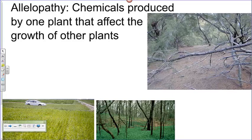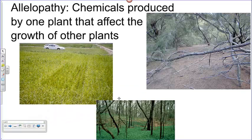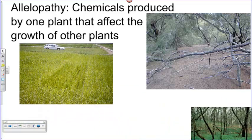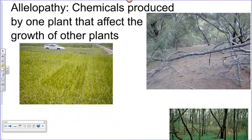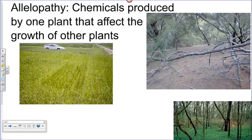Researching this topic is called allelopathy. Scientists are really interested in allelopathy. We have a pretty good understanding of how gravitropism and phototropism work, but we don't really understand allelopathy very well because the chemicals that plants use are so complicated and they're different based upon the kind of plant.